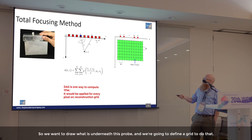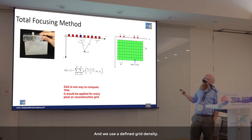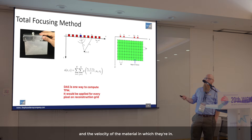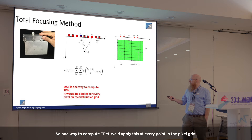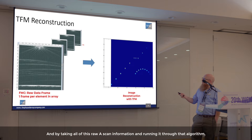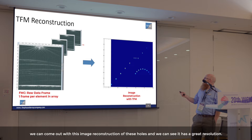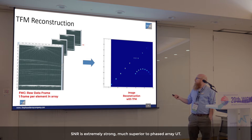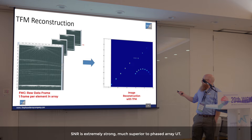We want to draw what is underneath the probe, so we define a grid with a certain density. We are concerned with the ray path to each point in the grid from the source element to the receiving element, and the velocity of the material. We use this information to perform delay-and-sum — one way to compute TFM — applied at every point in the pixel grid. This produces an image reconstruction with great resolution and extremely strong SNR, much superior to phased array UT.